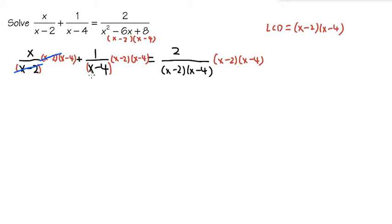For the second term, the x minus 4 cancels with that x minus 4. For the right side, this x minus 2 cancels with that x minus 2, and the x minus 4 also cancels with this x minus 4. As you can see, for the remaining terms, we are not going to have fractions anymore, which is a good thing.